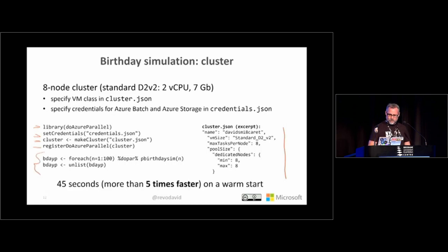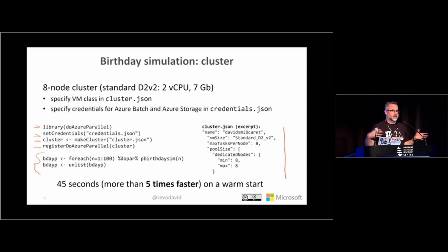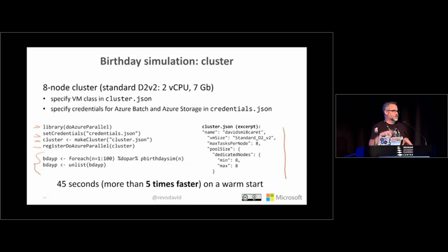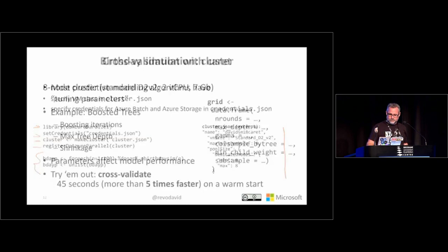Running that computation on the eight-node Azure cluster takes 45 seconds — five times faster than on my local machine. That's a little slower than running on a really big single machine due to the overhead of distributing across multiple machines, but if you have a really big job that can't be contained within one machine, this can really help.